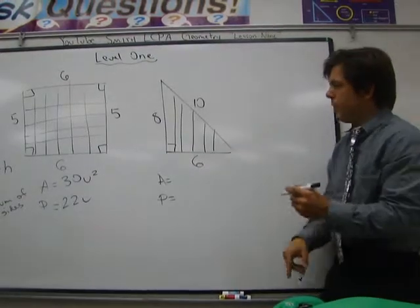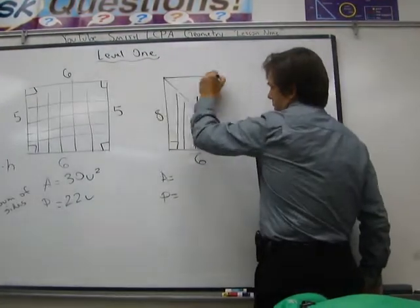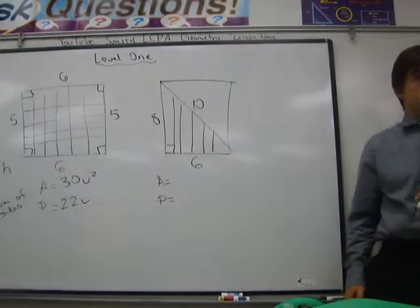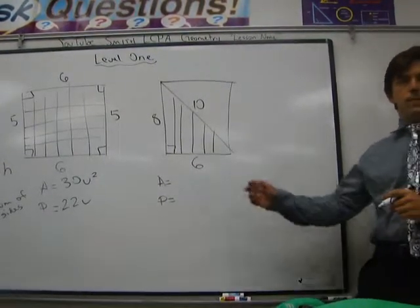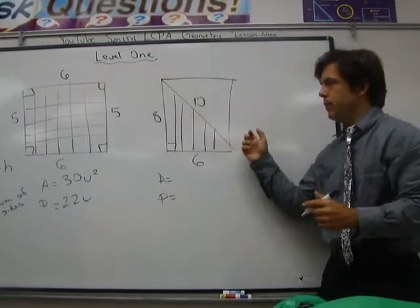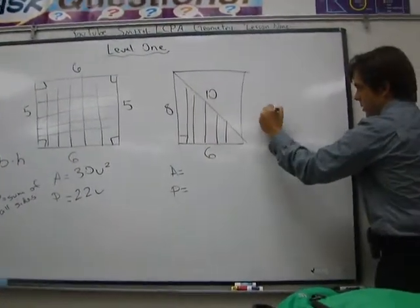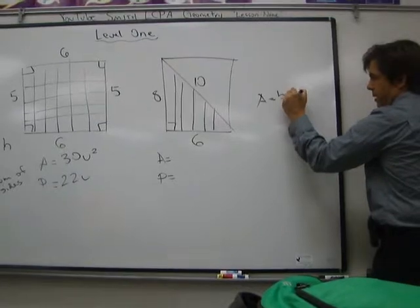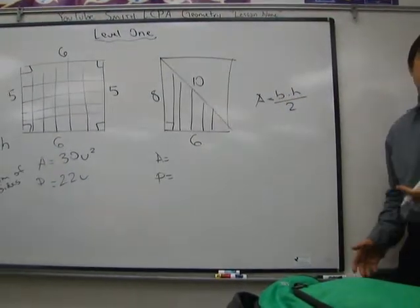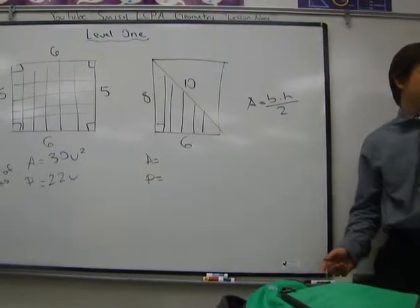So the best way to think about a triangle is that it's actually half of a rectangle. Does everybody see that? If it's half of a rectangle, then we're going to take that base times height and we're going to divide it by two because it's half of a rectangle. Does that make sense to everybody? Yeah.